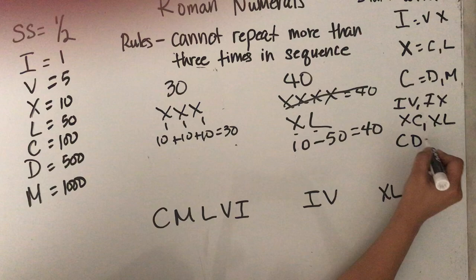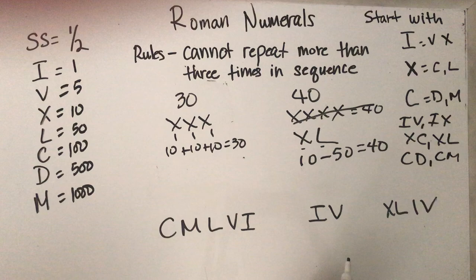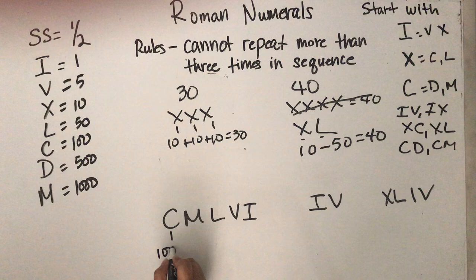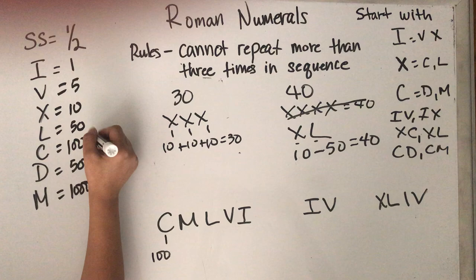So let me give you an example. C, M, L, V, I. How can we write this? So first of all, you know that C is 100. So this is 100. So I want you to write each one, what is the amount?